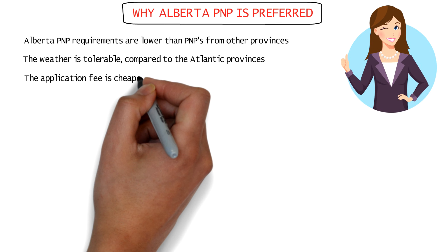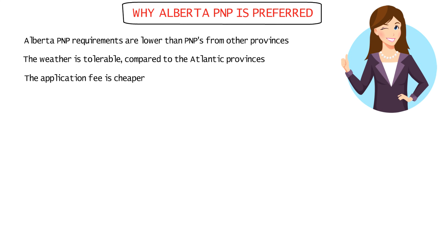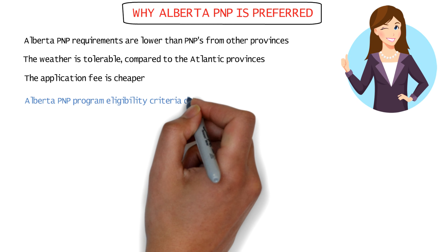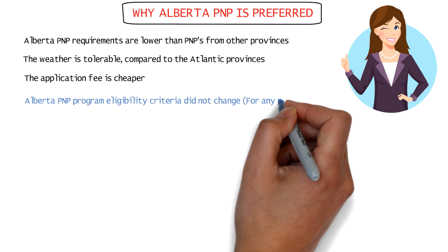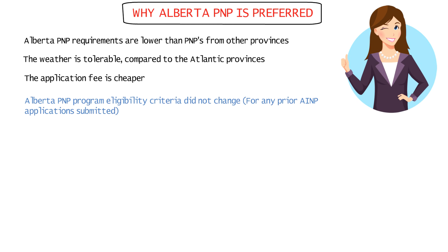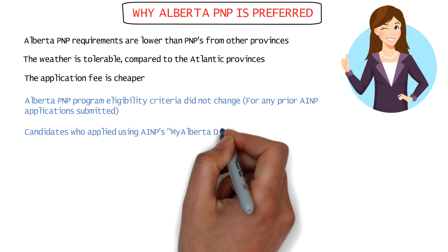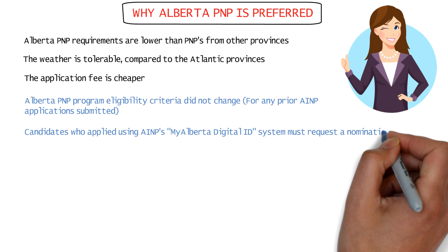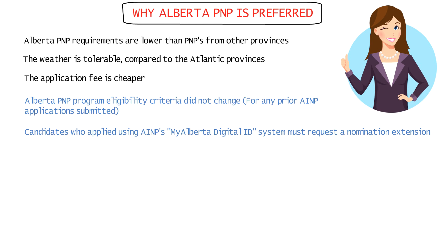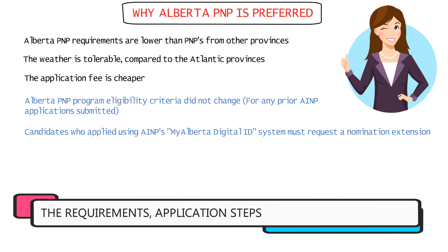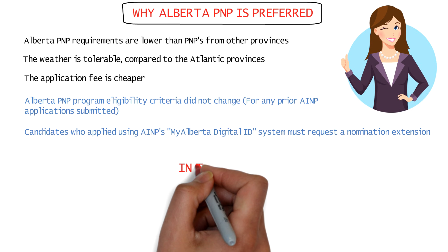The application fee is also considerably cheaper than other PNPs. For those who've already submitted AINP applications before, eligibility criteria did not change. Candidates who submitted their applications using AINP's online portal through its MyAlberta Digital ID system must request a nomination extension in the portal. All other post-decision processes remain unchanged.